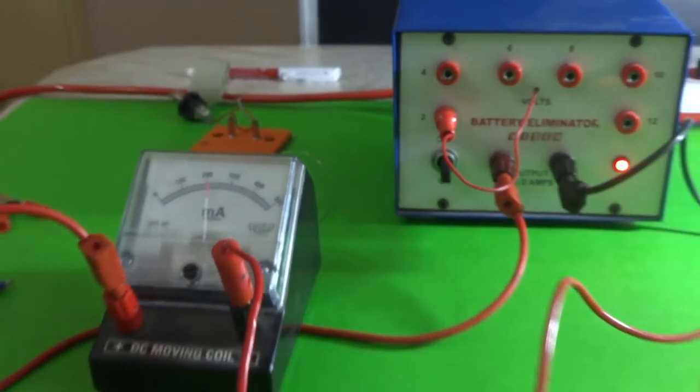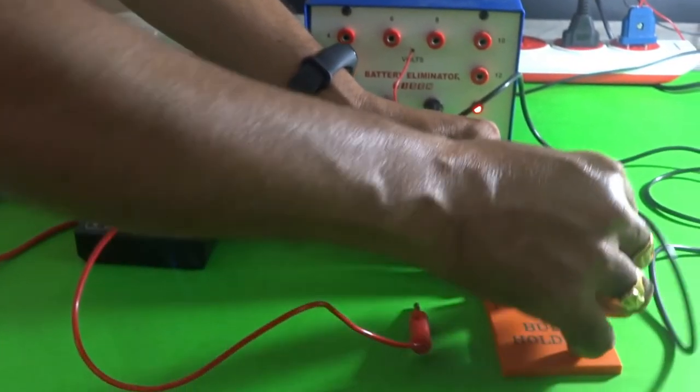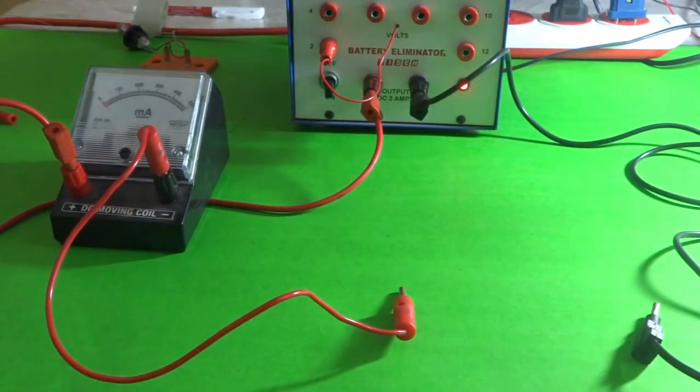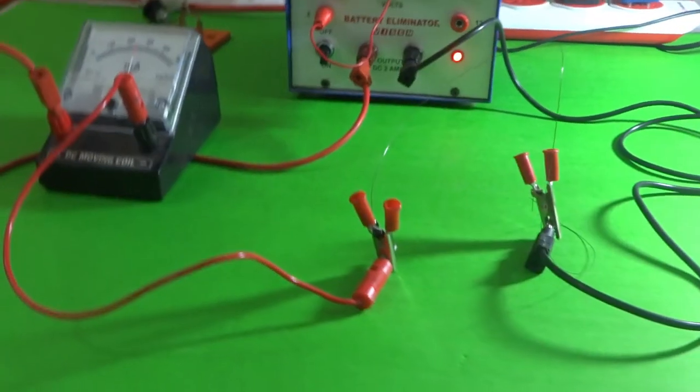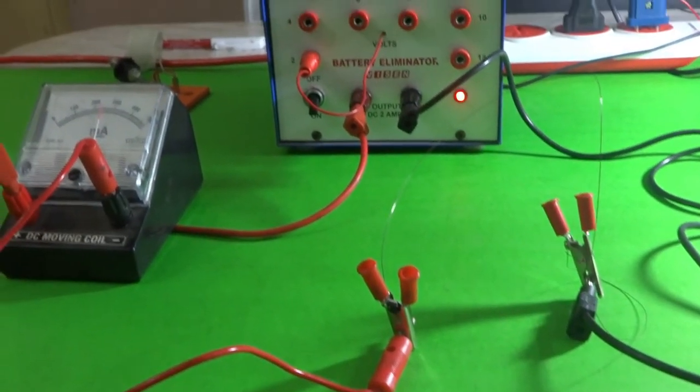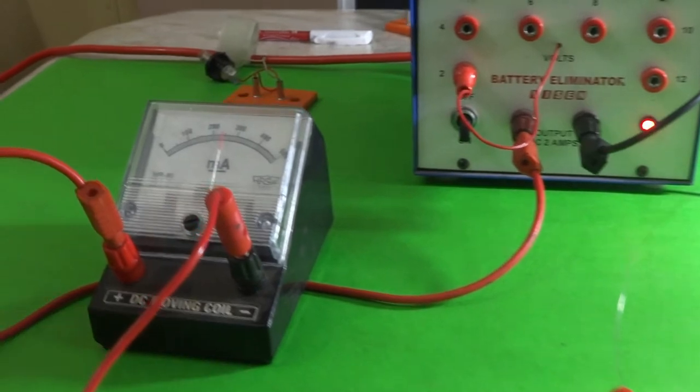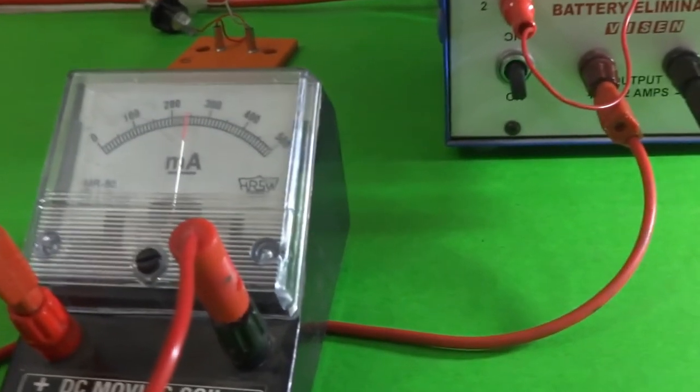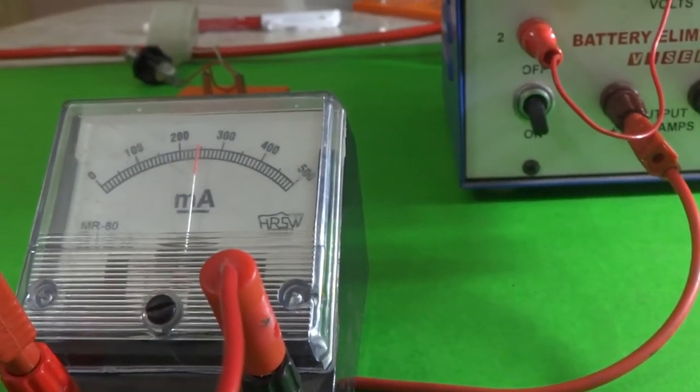Now let us fill this gap with a wire. We see that the reading in the milliammeter is around 250 mA.